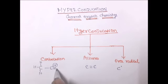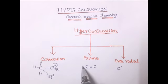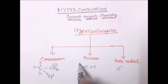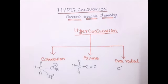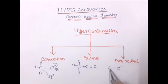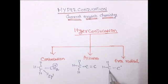Taking this compound, this Carbon is Sp3 hybridized. Similarly, in Alkenes, the double bond Carbon should be attached to an Sp3 hybridized Carbon. Here in Free Radicals, the Sp3 hybridized Carbon is attached to the Free Radical Carbon.